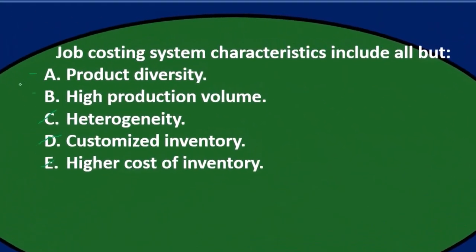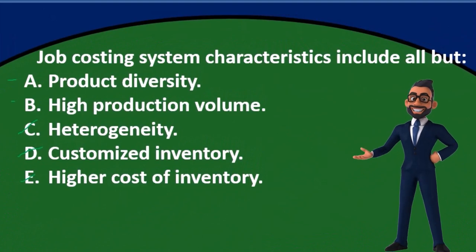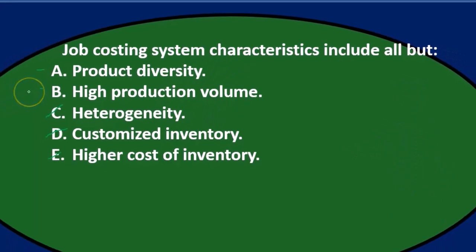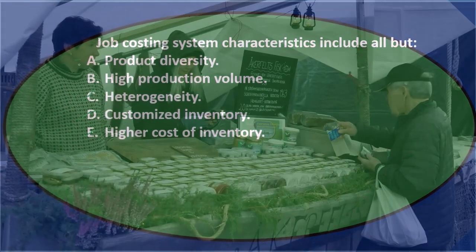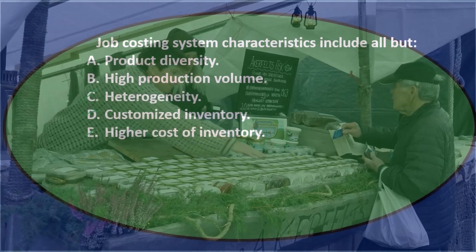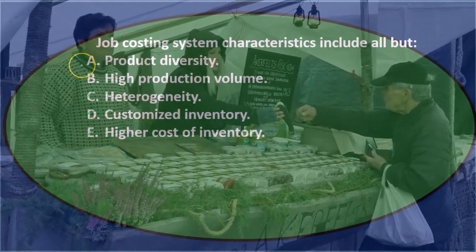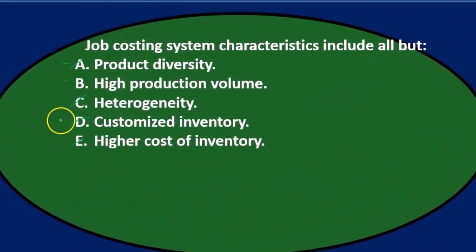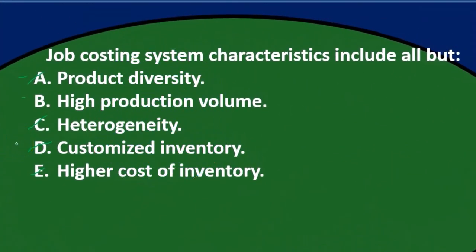Going through again: job costing system characteristics include all but A) product diversity and B) high production volume. Product diversity is essentially the same as heterogeneity — both indicate difference in products. So options A, C, and D all basically mean the same thing.